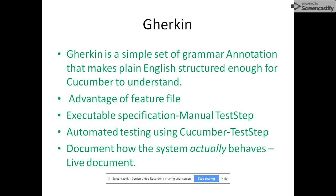The advantages of a feature file include: executable specification — you can give the feature file to a manual tester and they can execute the test cases as manual steps. Automated testing — you can use these steps directly to automate your application without rewriting them. Documentation — it documents how the system actually behaves, and you can give this document to business people for acceptance test criteria. It is essentially a living document.